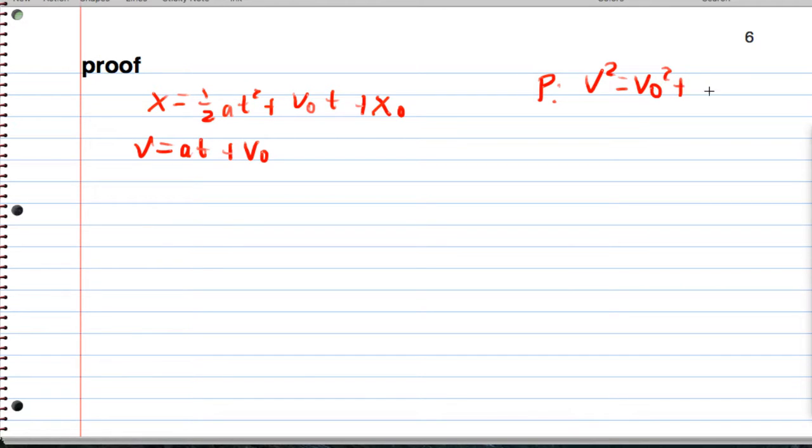Let's start. So we have x equals one-half a t squared plus v naught t plus x naught, and we have v equals a t plus v naught. And now what we want to do is prove the following. I'm going to write this shorthand as delta x, but we know that's x minus x naught.